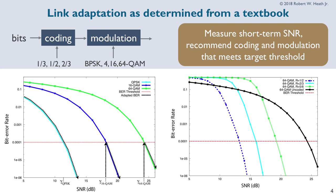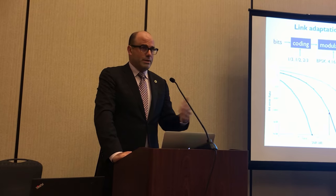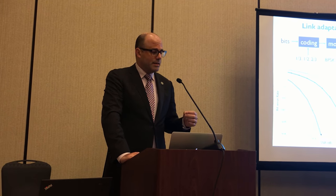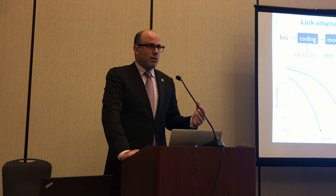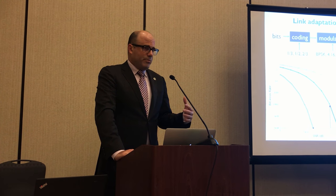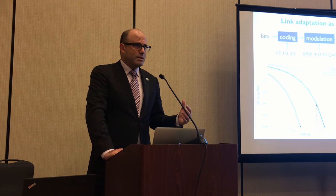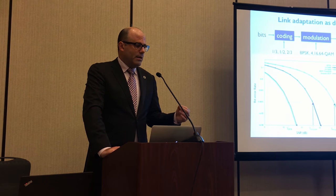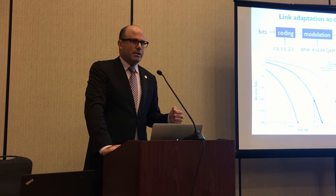I'm going to start off with a bit of background about link adaptation. If you take a wireless communications course and study link adaptation, the explanation will be something along the following lines. You have a wireless communication system with a slow-fading channel, and the SNR is varying over time. The idea is that if a receiver could estimate the SNR and tell the transmitter, then the transmitter could adapt transmission parameters like code rate and modulation order to send as high a data rate as possible while meeting an error rate target.